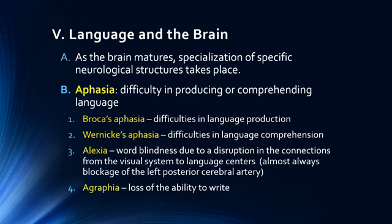One thing that can occur is difficulty in producing or comprehending language, called aphasias, which are relatively common. The left communicating artery can experience obstructive stroke or other cerebrovascular incidents, causing blockage to these areas, and aphasia is a very common symptom. Broca's aphasia occurs when there is difficulty in language production, indicating damage to Broca's area. Wernicke's aphasia is a difficulty in language comprehension. You can also get conduction aphasia, where there is no problem producing language on its own and no problem comprehending it, but an inability to repeat what someone says — Wernicke's area cannot communicate with Broca's area, so you cannot repeat something back to someone.